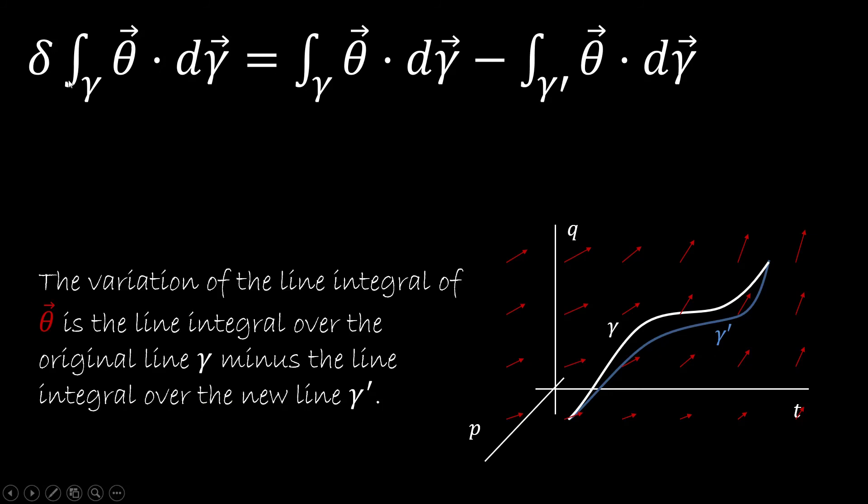We have the line integral of theta, and we want to make a variation. But what does it mean to make a variation? It means to make the line integral on gamma and subtracting the line integral over gamma prime, which is going to be a small variation on gamma. So we're basically making two line integrals, one from A to B and the other one from B to A. So we are making a line integral over a closed loop.